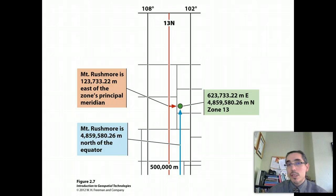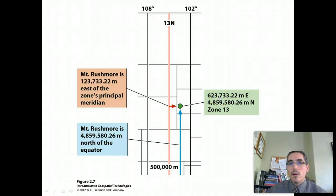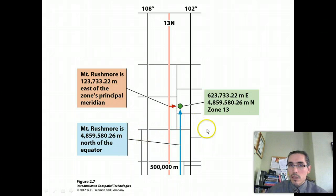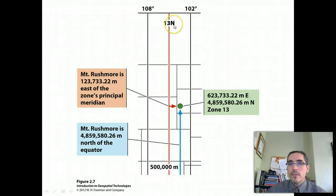UTM favors precision because you're working with meters over large distances. The 623,000 means we are that far east of the origin. Then we get the Y position, or northing: this position is 4,859,580.26 meters north of the equator, which is where our origin is. The way we write this position is easting first, then northing, then the zone — 13 in this case. We also often designate the hemisphere to distinguish from zone 13 in the southern hemisphere. In the military grid system, lettered latitudinal zones serve that purpose instead.